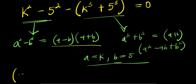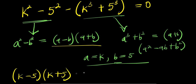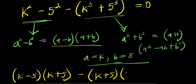Inserting these identities, k squared minus 5 squared becomes (k minus 5)(k plus 5), and k cubed minus 5 cubed becomes (k minus 5)(k squared plus 5k plus 25).